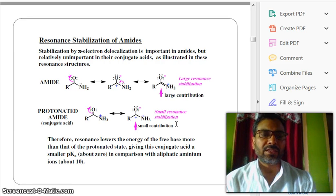Therefore, resonance lowers the energy of the free base more than that of the protonated state, giving this conjugate acid a small pKa, about zero, in comparison with aliphatic aminium ion, about 10.